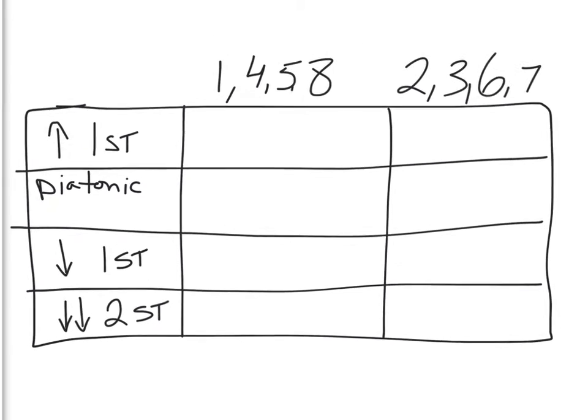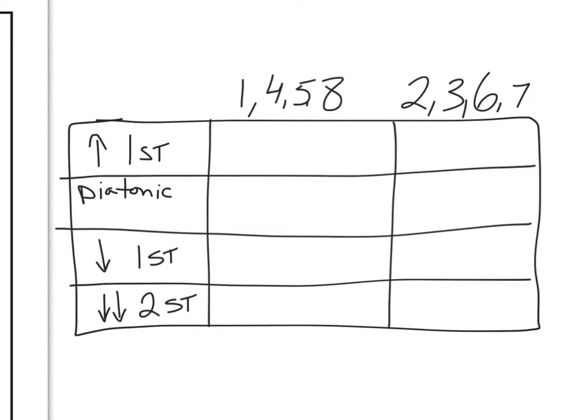First of all, on the left-hand side of this chart, we're going to say diatonic on the second spot down. Diatonic means it fits within the key signature. The upper note is part of the key signature of the lower note. Above, if we are raised one semitone or one half step. Below that, we're down one semitone. And in very rare cases, we are down two semitones.